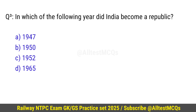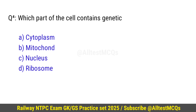Question number 3: In which of the following year did India become a Republic? Correct option is B — 1950. Question number 4: Which part of the cell contains genetic material? Right option is C — Nucleus.